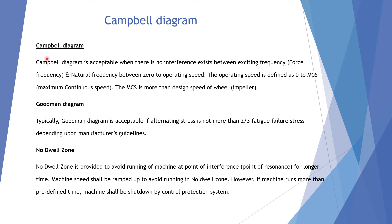These three are very important: first is the Campbell diagram. When the Campbell diagram is not acceptable, we should go for the Goodman analysis. If the Goodman analysis is also not acceptable, then we go for the no-dual zone. Let's understand all three factors in the coming slides.